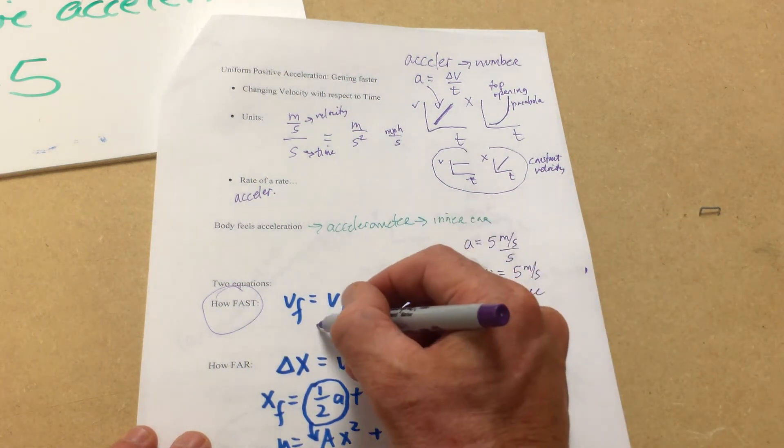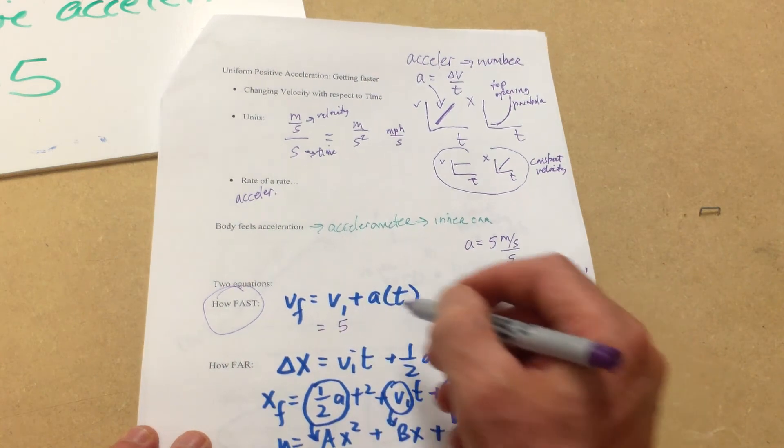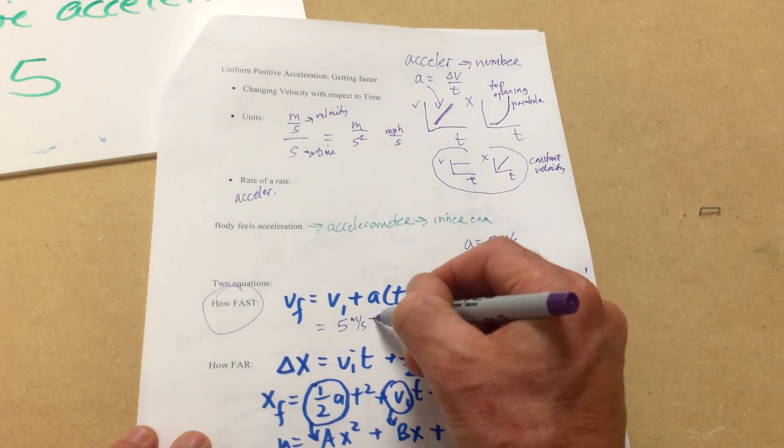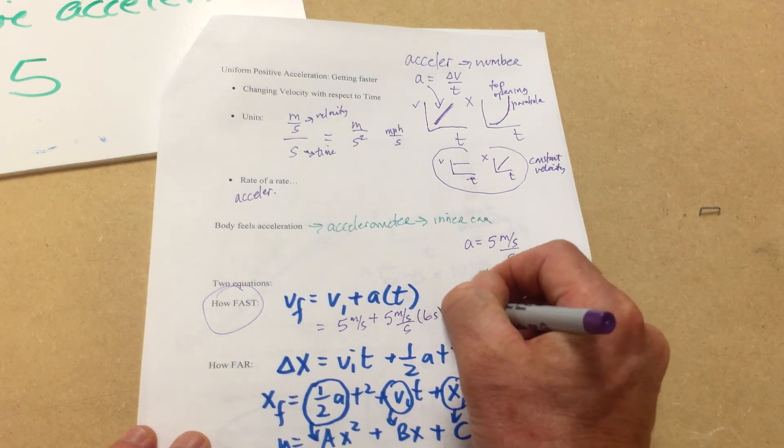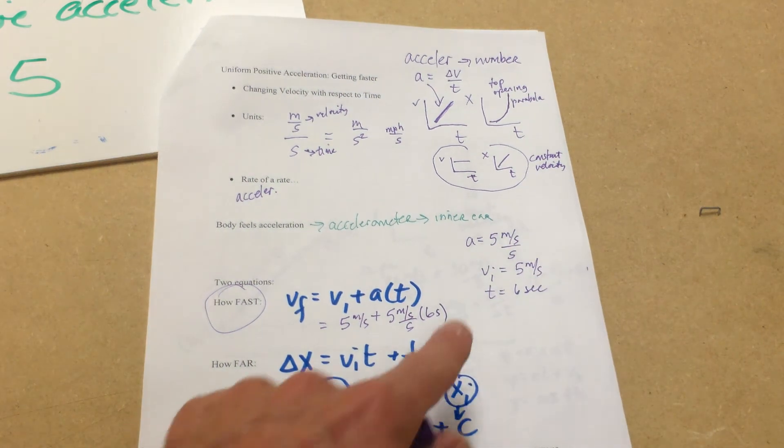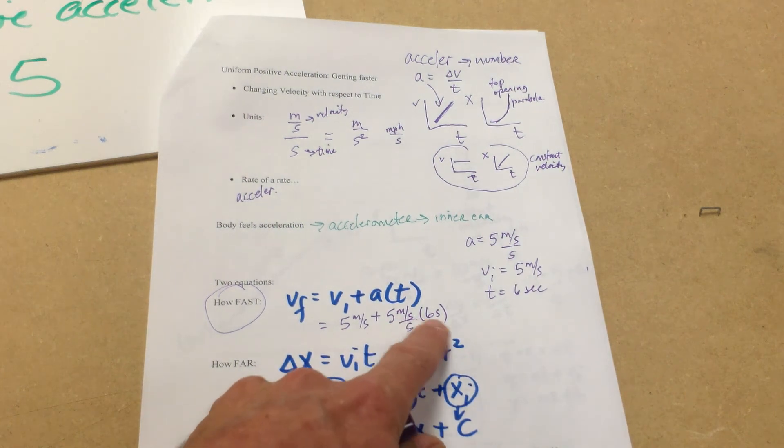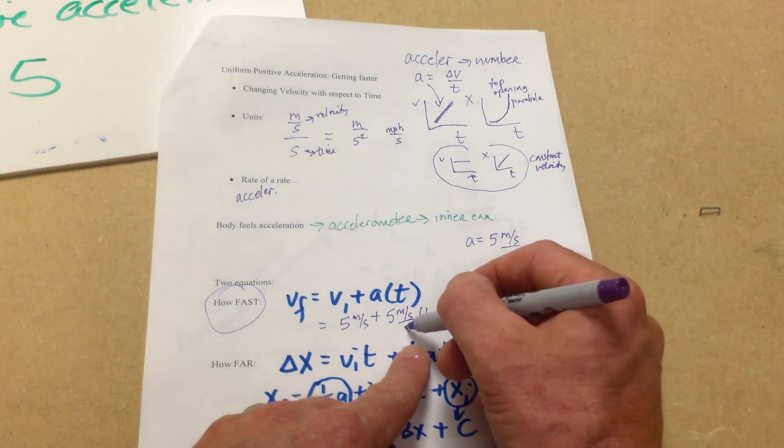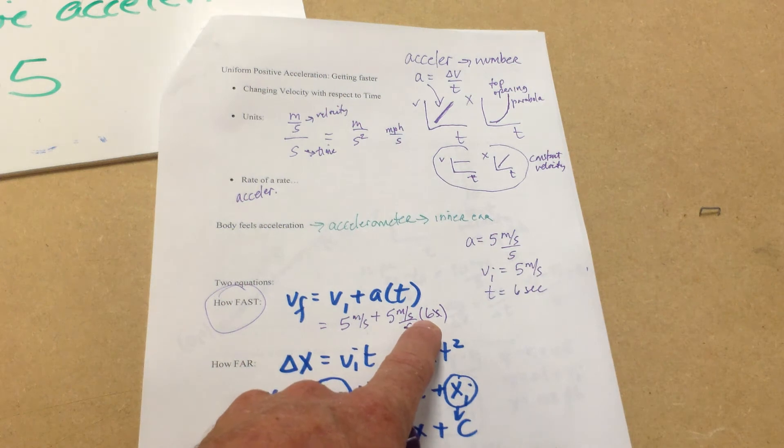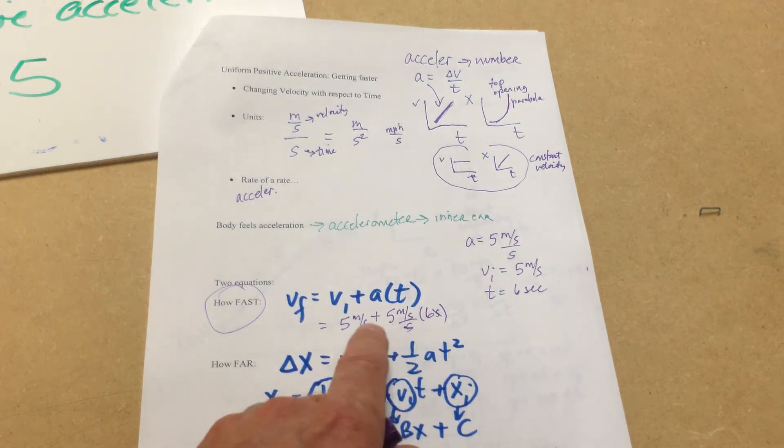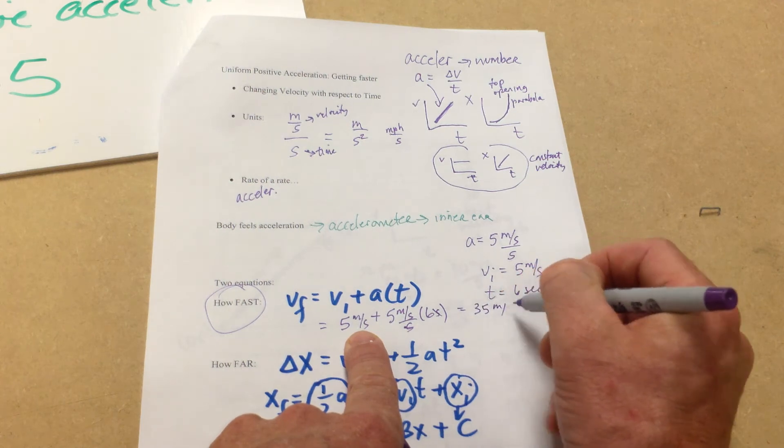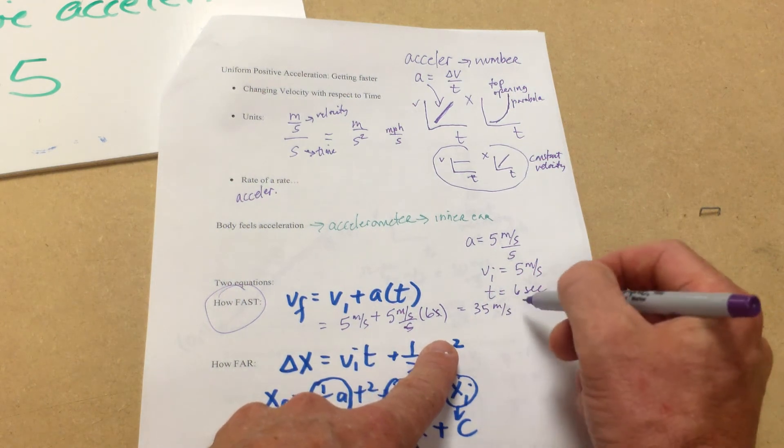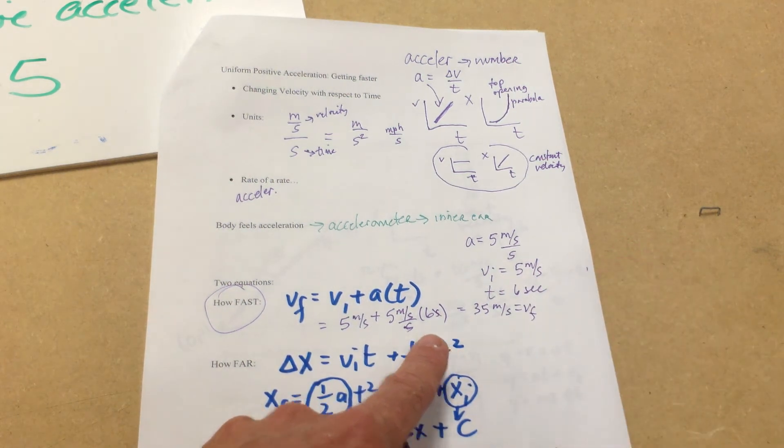Well, we can say the initial velocity is five meters per second, plus the acceleration is five meters per second per second. We can put six seconds in there. We multiply these terms, these two numbers, we multiply. The seconds cancel. We're left with 30 meters per second. We then add in this, so we get 35 meters per second. A velocity idea. That's the final velocity after six seconds.